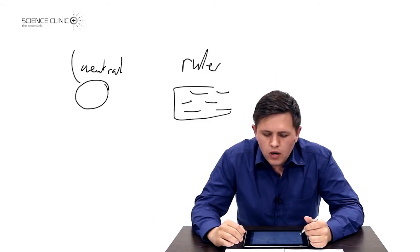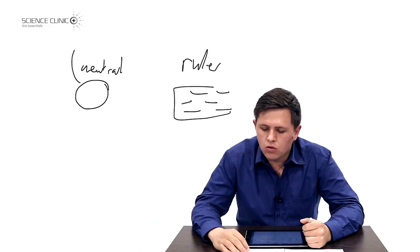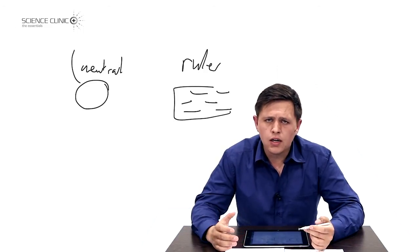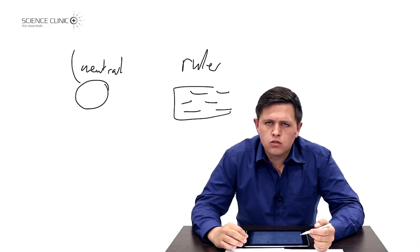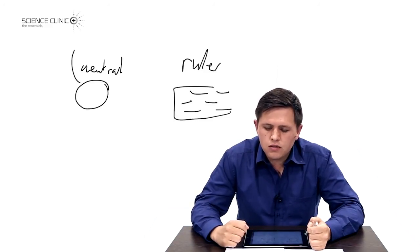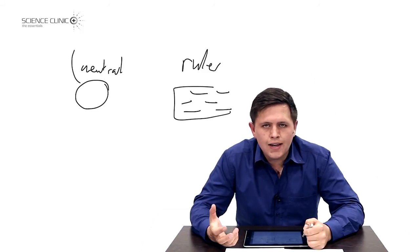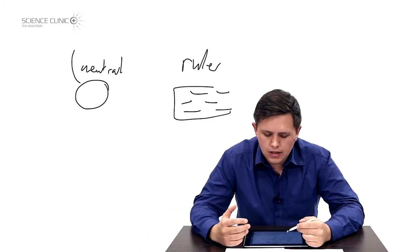The final question asks whether electrons were added to or removed from the perspex rod during rubbing. Since the proton count cannot change and the ruler is negatively charged, electrons must have been added to the ruler, giving it an excess of electrons and thus a negative charge.